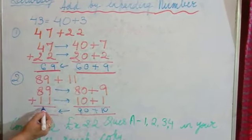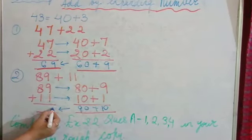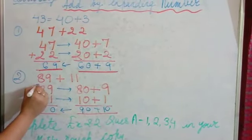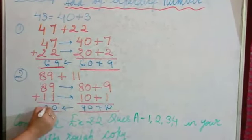Now this children will be a normal addition. 9 plus 1, 10. Yes. 0, carry over 1 and here it gives you 10.